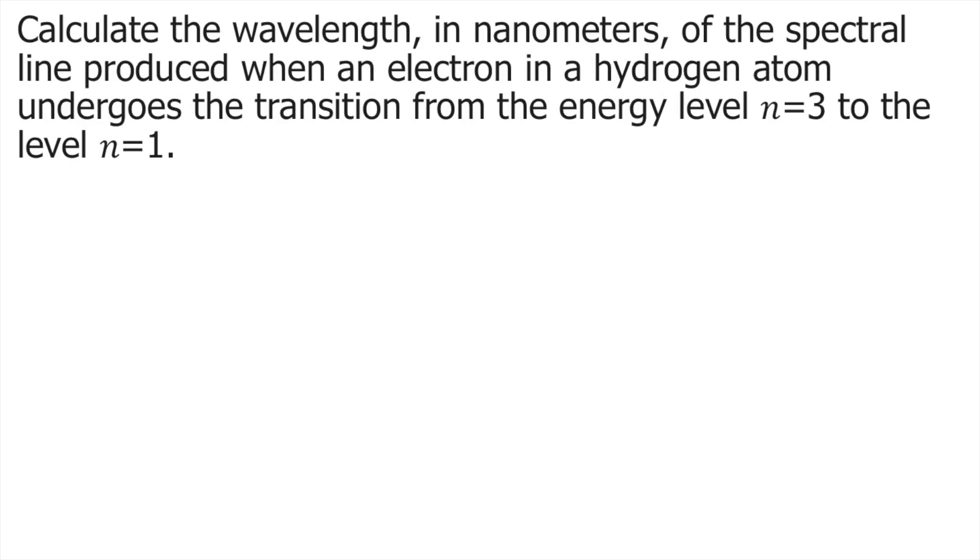Calculate the wavelength in nanometers of the spectral line produced when an electron in a hydrogen atom undergoes the transition from the energy level n=3 to the level n=1.